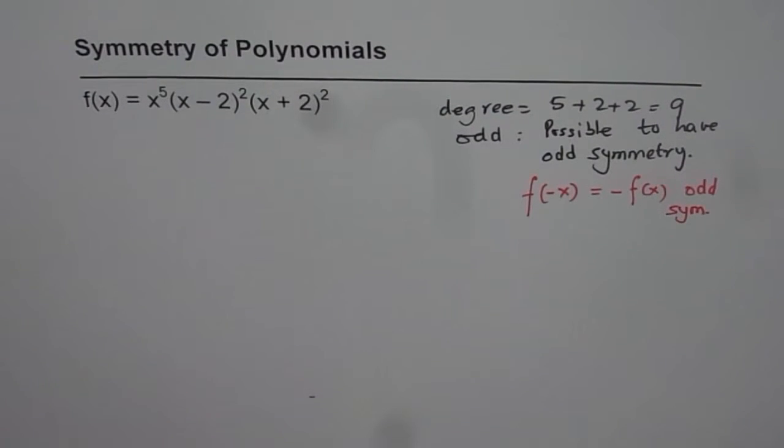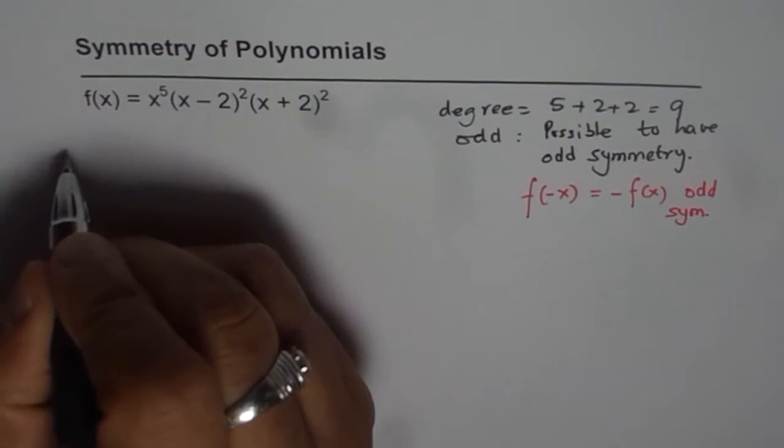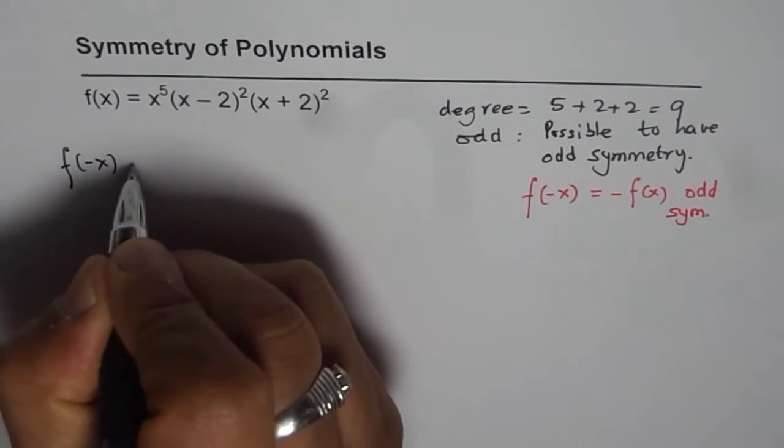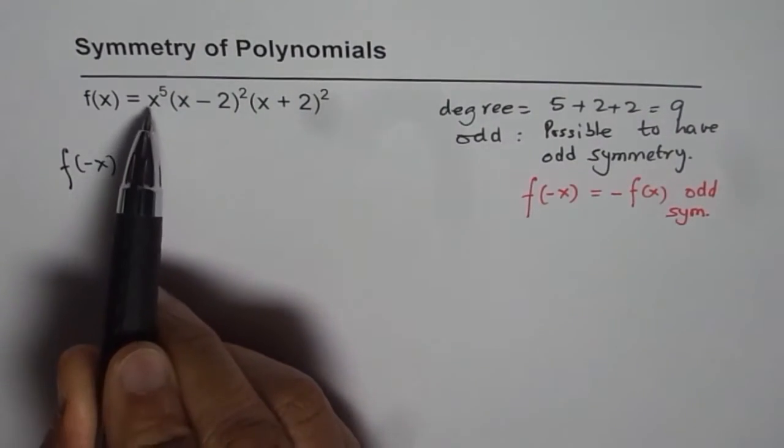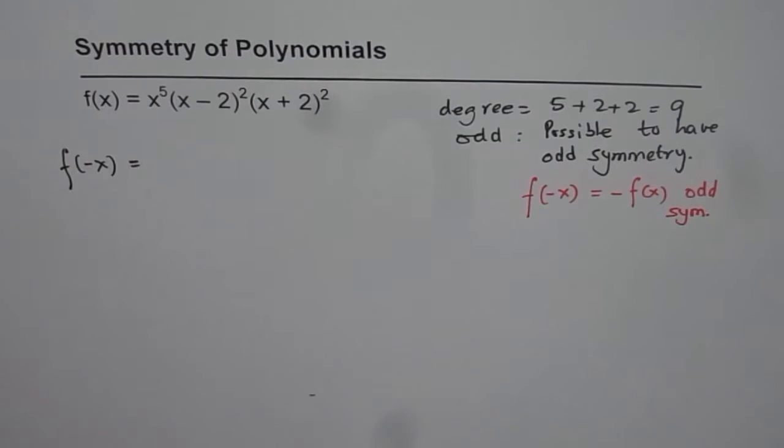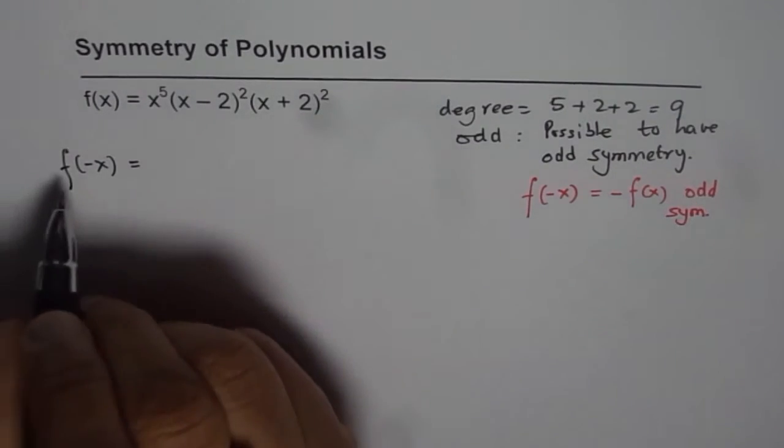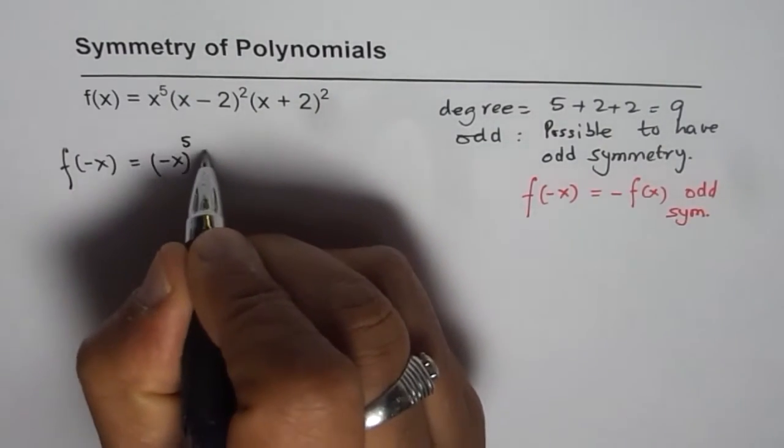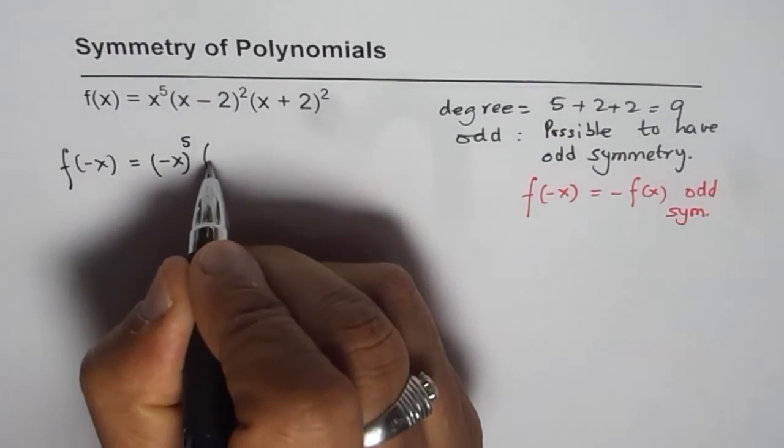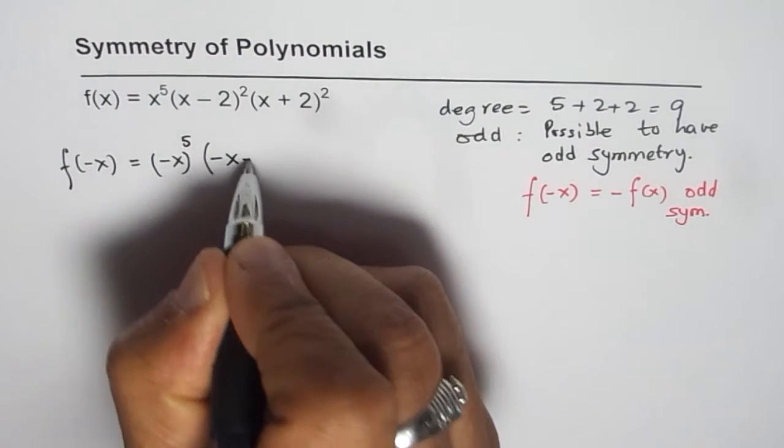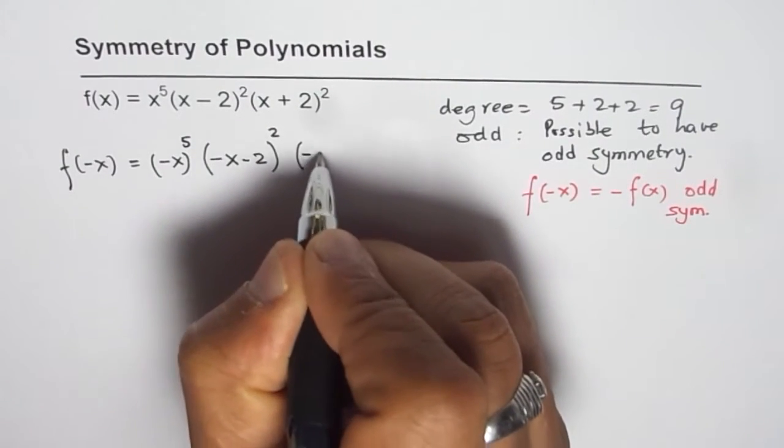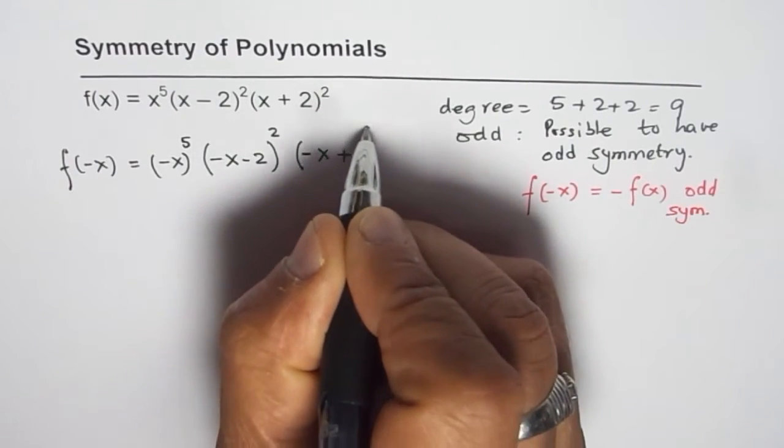So let's test whether the function has odd symmetry or not. Let's find what is f(-x). We have f(-x) equals replace all x with -x. That is what it means to find f(-x). So we have (-x)^5, and then replace x with -x. We get (-x - 2)^2 and then we have (-x + 2)^2.